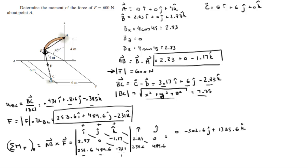And for the negative diagonals, negative diagonal, negative diagonal, negative diagonal. The negative diagonals come out to be negative 258.6 times 0 times K is 0. Negative 489.6 times negative 1.17 times I is positive 572.8 I. And negative negative 231 times 2.83 times J is positive 653.73.